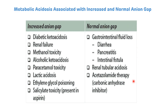The causes of normal anion gap metabolic acidosis involve loss of bicarbonate-rich fluid from either the kidney or gastrointestinal tract. As bicarbonate is lost, chloride ions are reabsorbed with sodium or potassium to maintain electroneutrality. The causes include gastrointestinal fluid loss such as diarrhea, pancreatitis, and intestinal fistula, as well as renal tubular acidosis or acetazolamide therapy — acetazolamide being an example of a carbonic anhydrase inhibitor. You must remember these causes as they are frequently asked in entrance examinations.